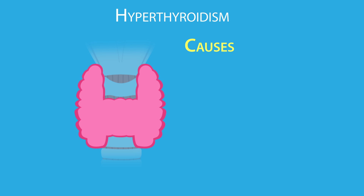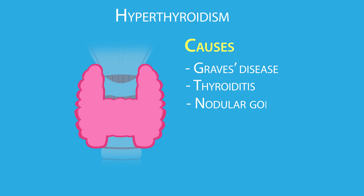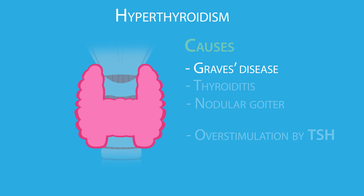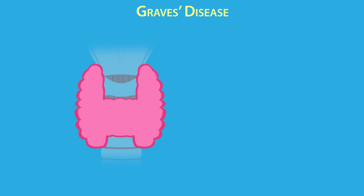There are two basic causes of hyperthyroidism. The most common cause has nothing to do with thyroid stimulating hormone — these causes include Graves' disease, thyroiditis, and nodular goiter. The more rare forms of hyperthyroidism are due to overstimulation by TSH and similar hormones.